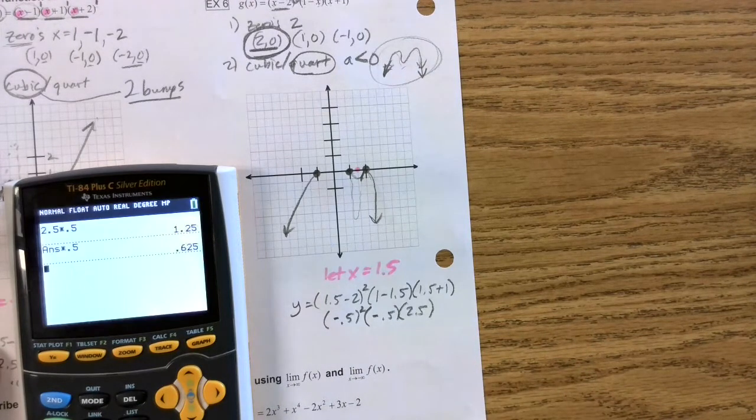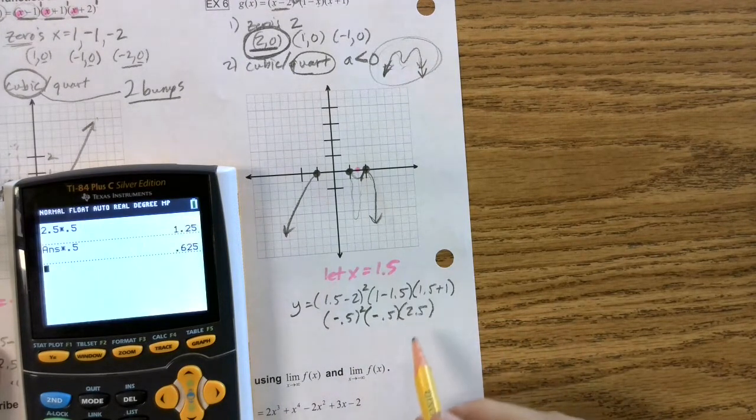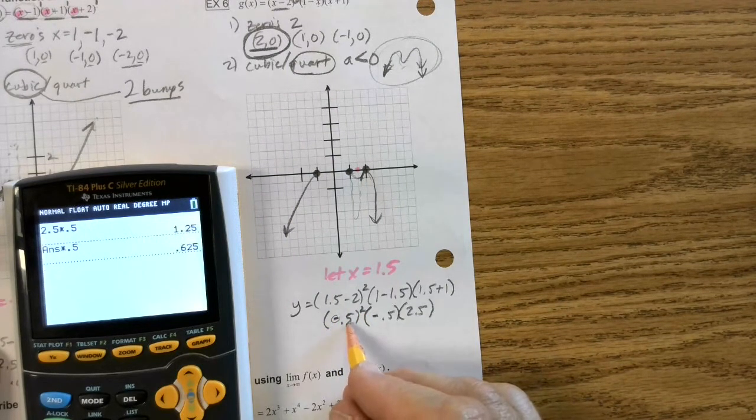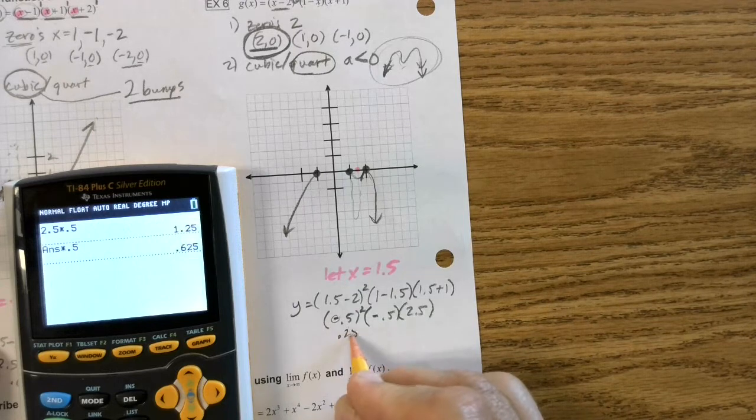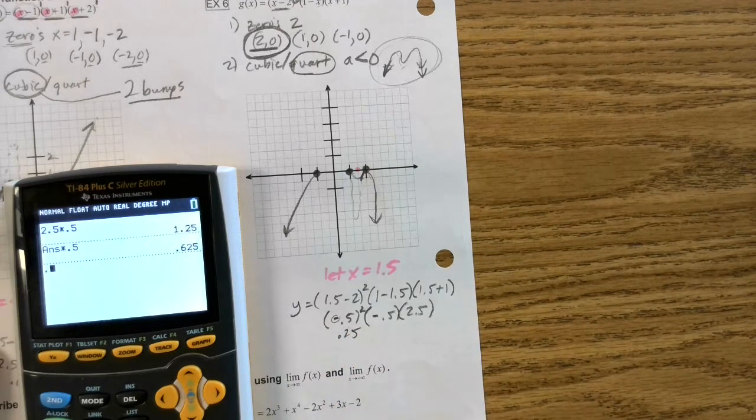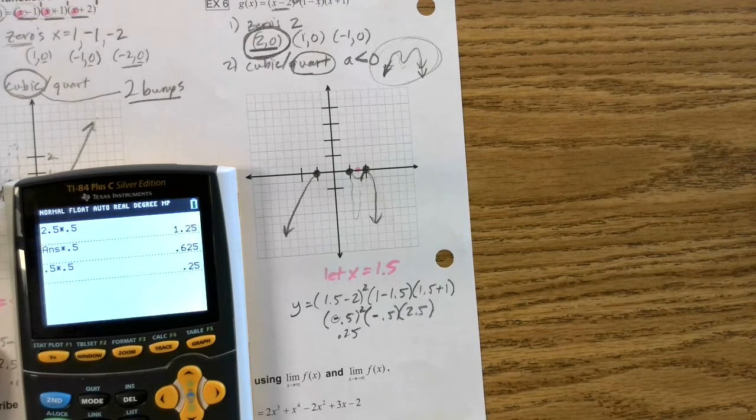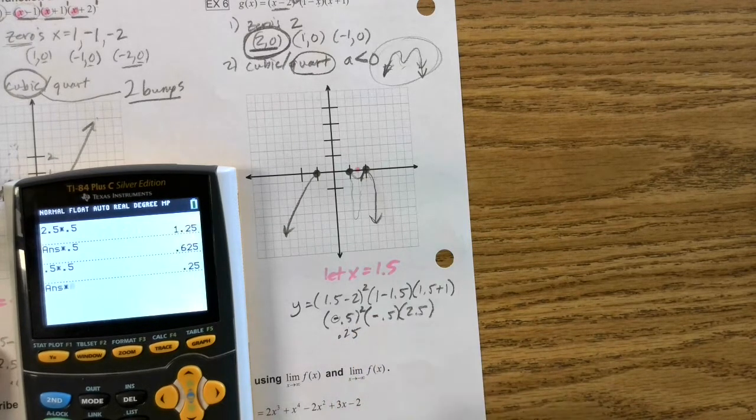I'm just going to hammer this stuff out. So I'm going to go, I know a negative times a negative is positive, so 0.5 times 0.5 is just 0.25, but I'm going to show it on my calculator. So 0.5 times 0.5, enter, 0.25 times, I'm going to ignore that negative for a second, 0.5.